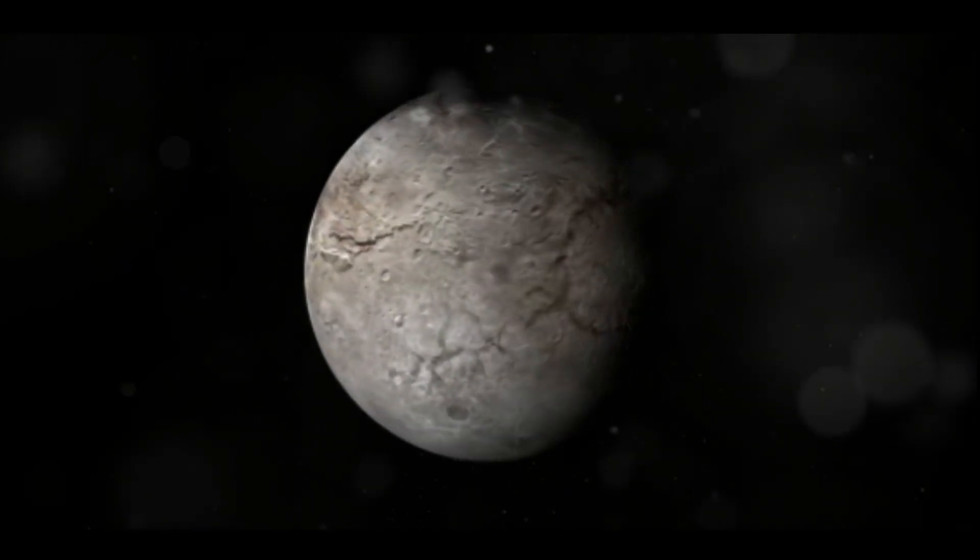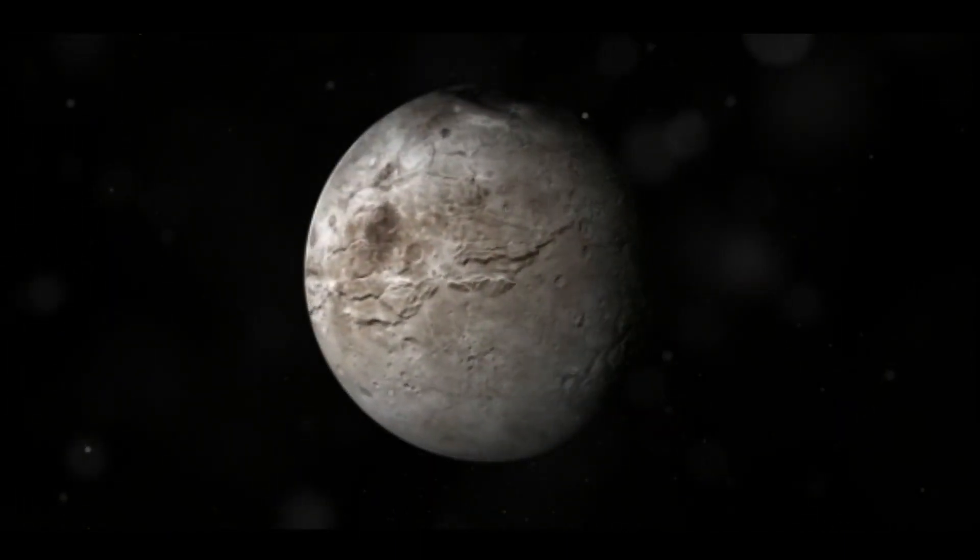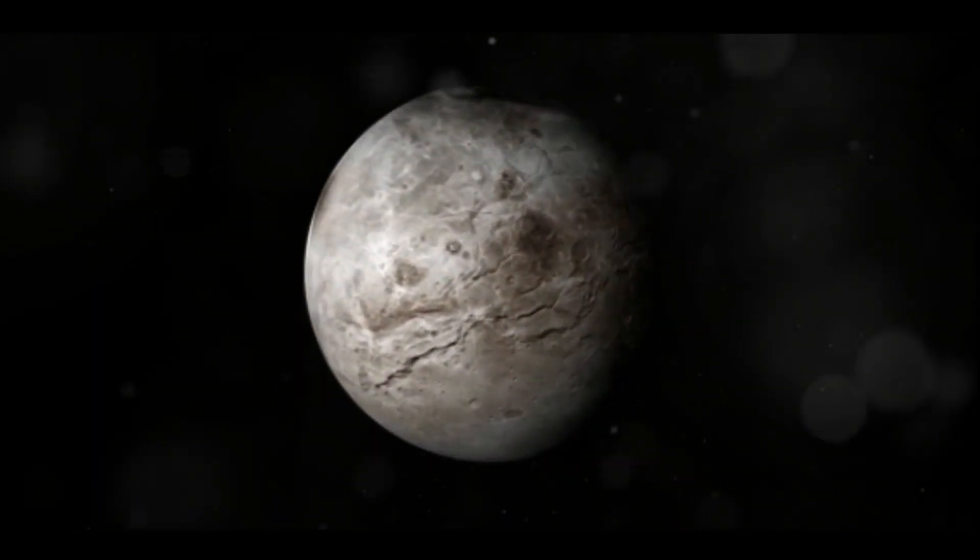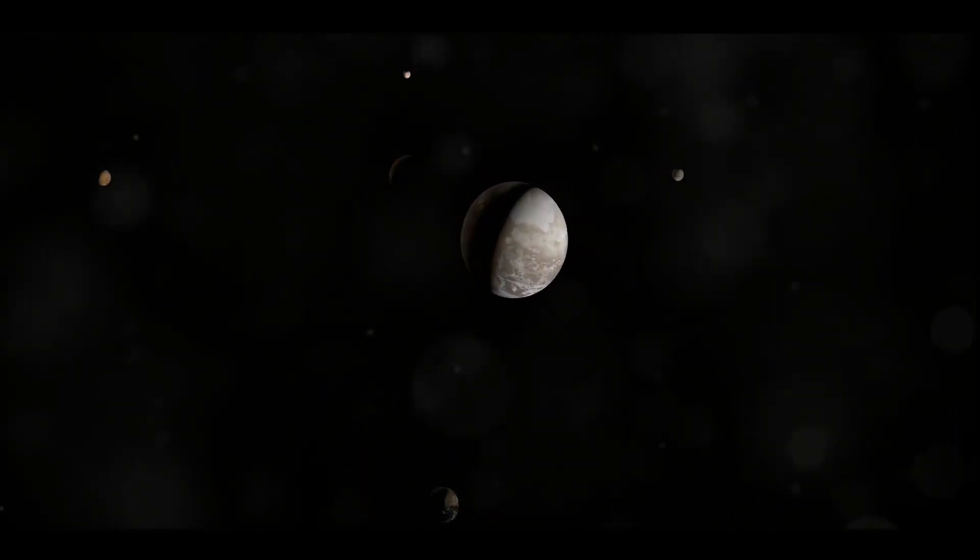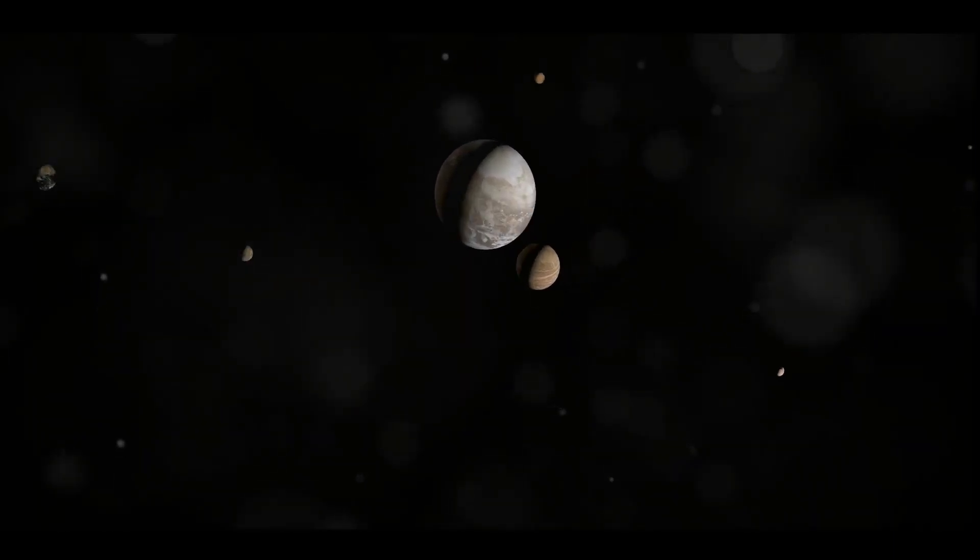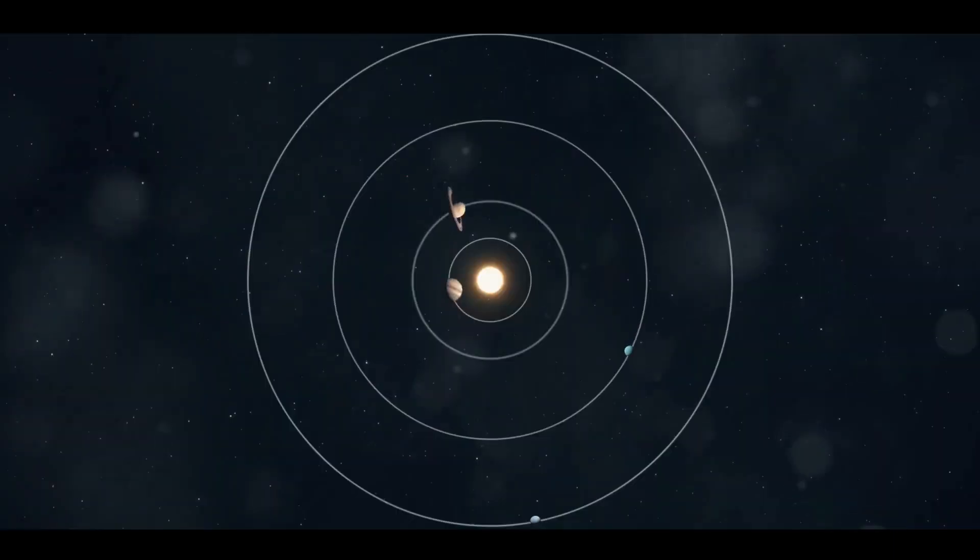One of the most intriguing aspects of Pluto is its moon, Charon. Discovered in 1978, Charon is so large in relation to Pluto that some consider the pair a binary system. They're locked in a gravitational dance with each body always showing the same face to the other.